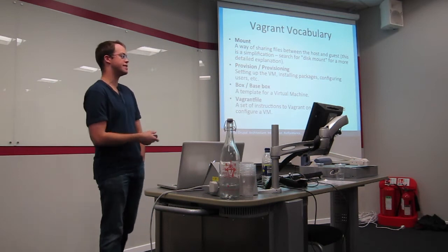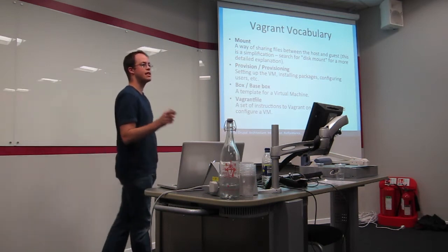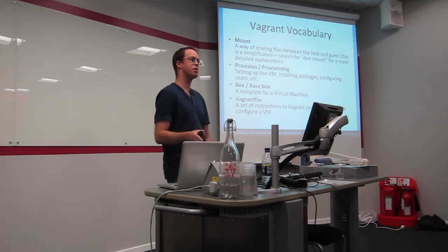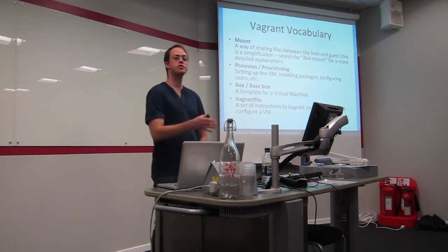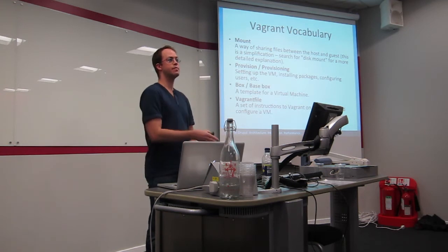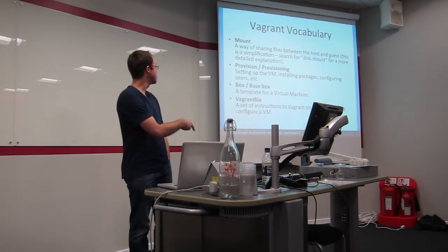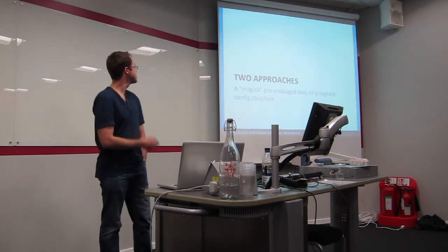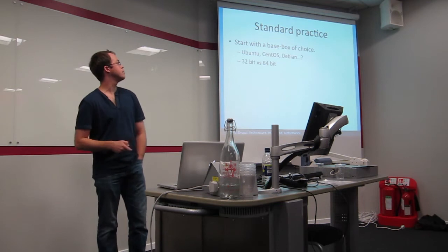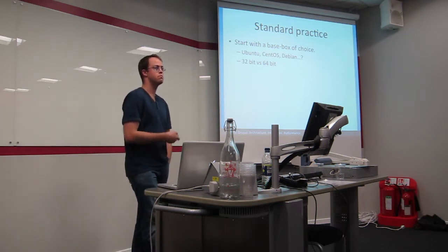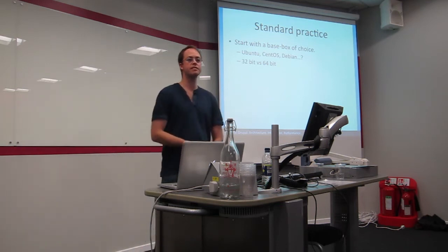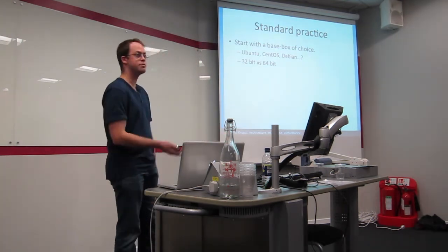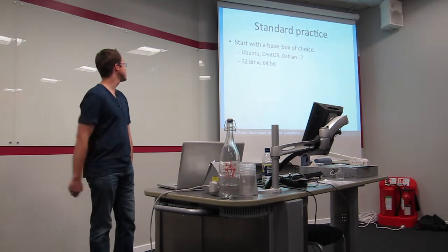Going back to Box and Basebox, the Basebox is basically a template for a virtual machine. You can't start a Basebox itself, but a Basebox is a set of instructions to Vagrant on what needs to be installed into your VM, and the Vagrant file contains those instructions. So, you might use Ubuntu. You might find that all of your production machines are Red Hat, in which case you might want to use CentOS for your Box. You can use Debian. You could use Slackware 32 or 64.